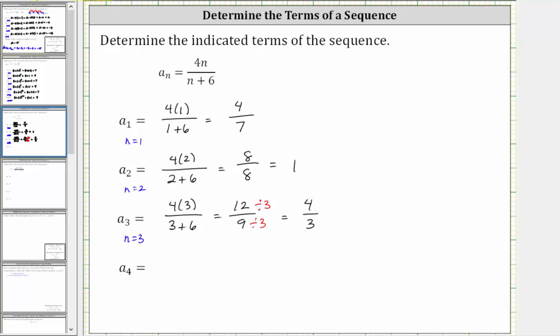Finally, for a_4, we know n = 4. Substituting 4 for n, we have 4(4)/(4+6). Simplifying, 4 times 4 is 16, and 4 plus 6 is 10.